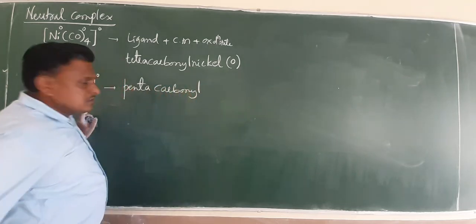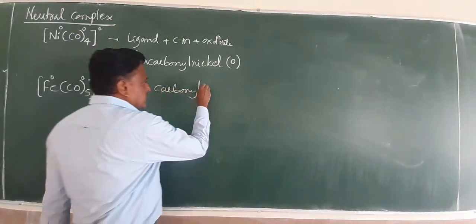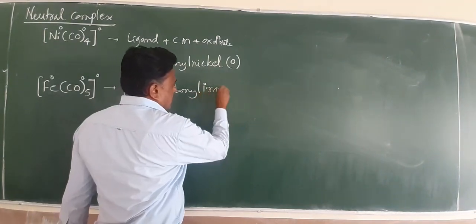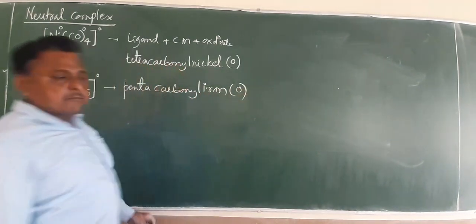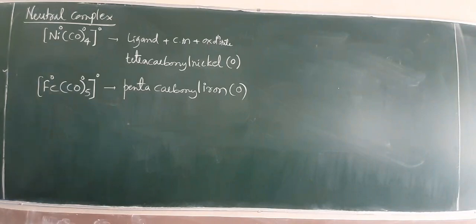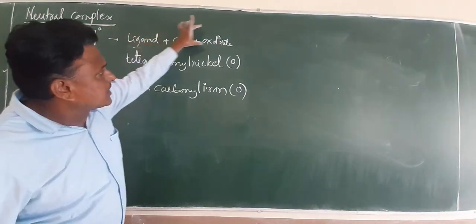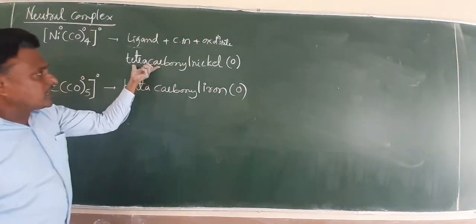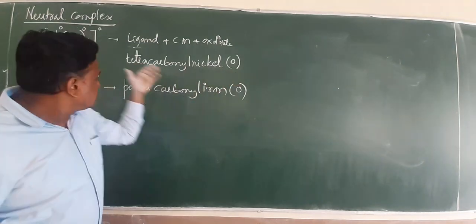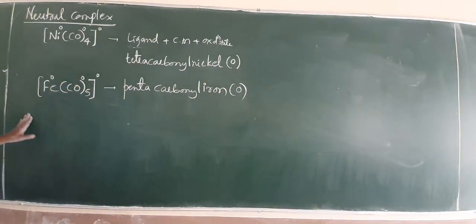If you use another one, Fe CO5. Very fast. Simply zero zero zero. Penta carbonyl. This is Fe, iron.